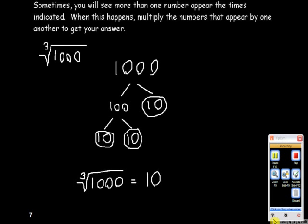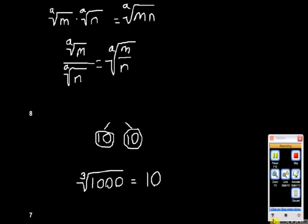Another example, the cube root of 1000. 1000 factors into 1 and 10. And 100 factors into 10 and 10. 10 appears three times.